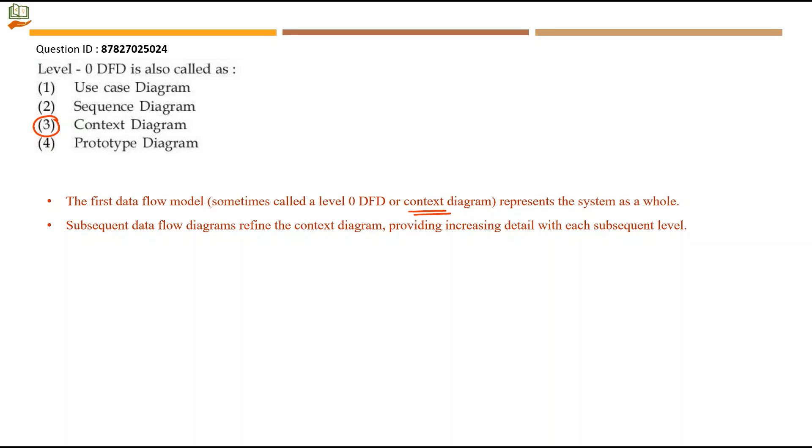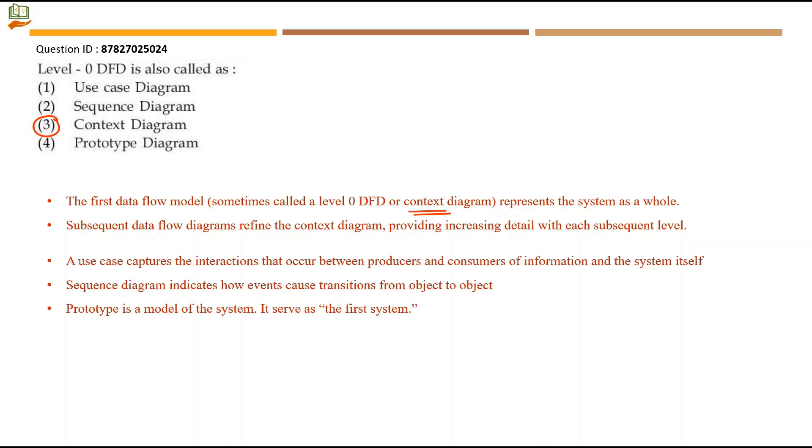Subsequent data flow diagrams at level 1 and level 2 refine the context diagram, providing increasing detail with each subsequent level. Let's also learn about the other 3 options. A use case captures the interaction that occurs between the producers and consumers of information and the system itself. So they used to say actors and use cases - what does a particular entity or person do? What are the functions associated with that actor?